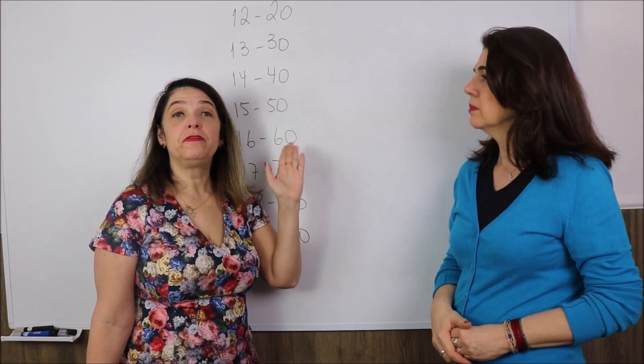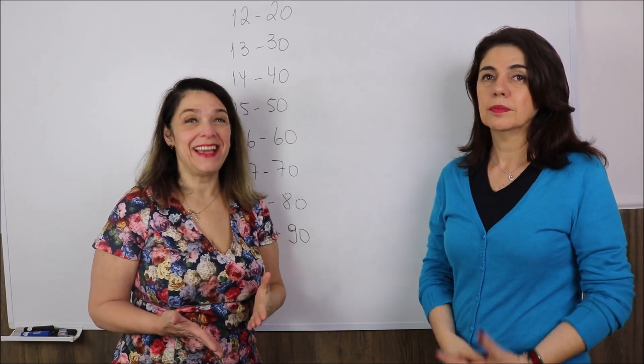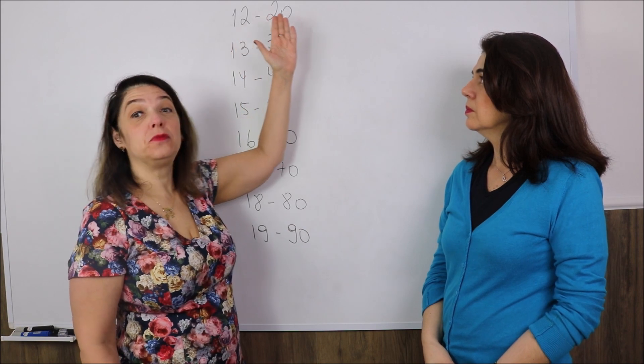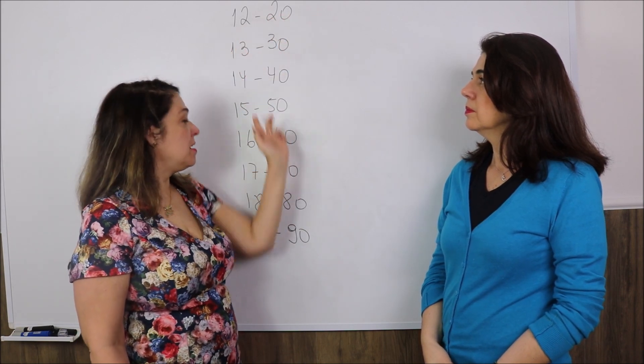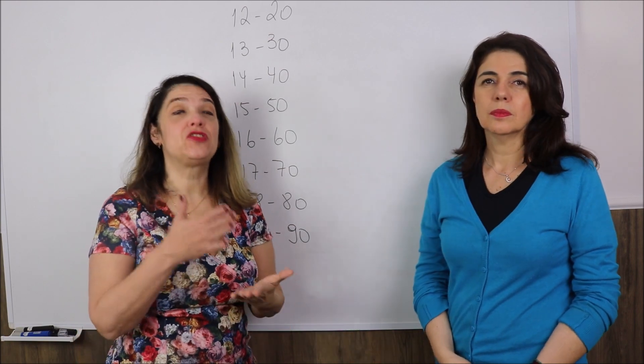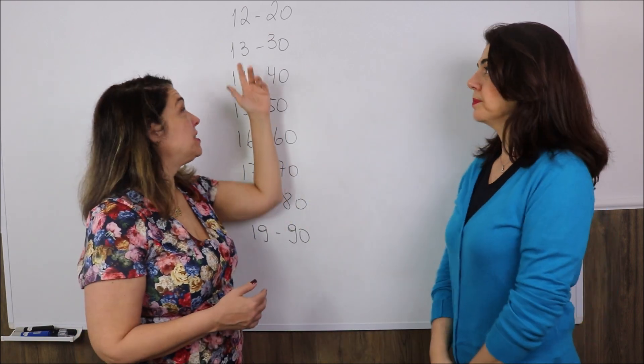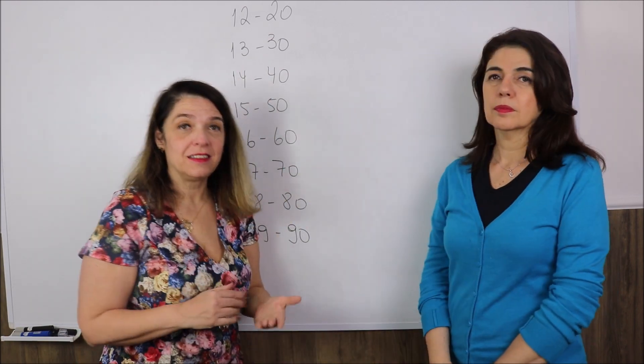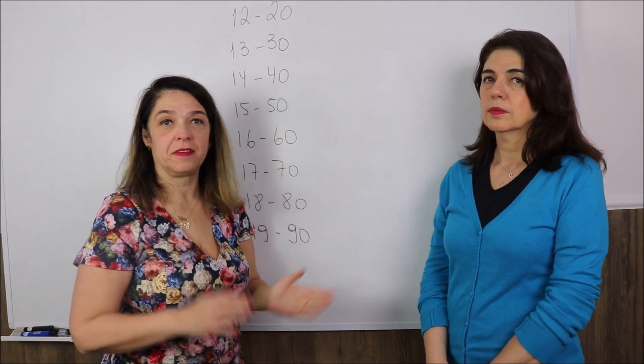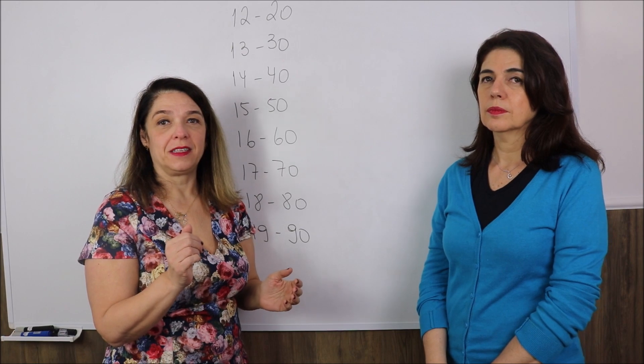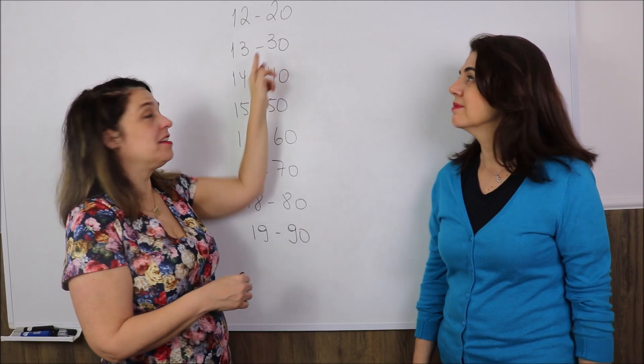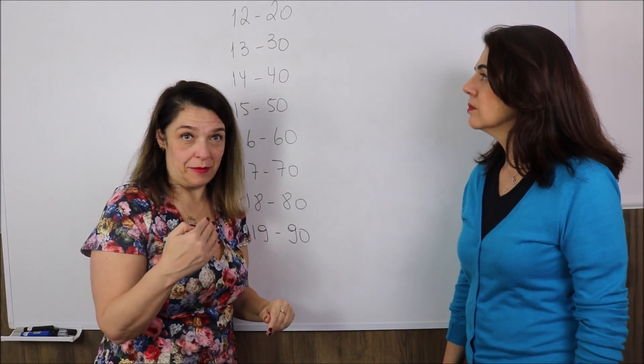These numbers are often confused because their pronunciation is very similar. These pairs, the biggest difference is the stress. So we say thirteen, thirteen. But we say thirty, thirty. Here the stress is on the second syllable, and here the stress is on the first syllable.